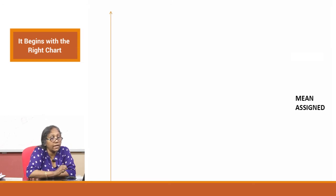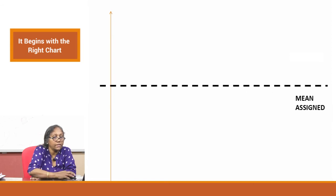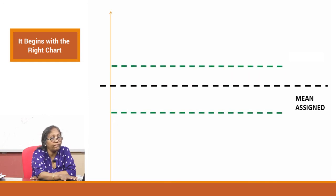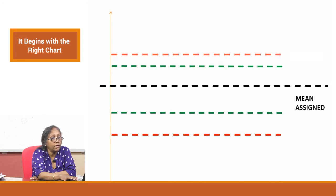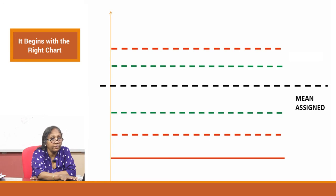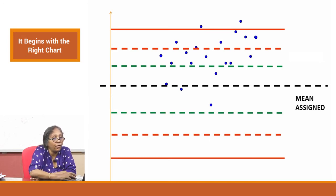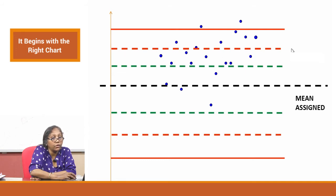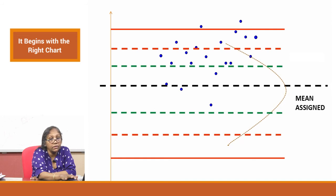Looking at this slide: this is a control we are running. Your assigned mean is here, with minus 1 SD, plus 1 SD, minus 2 SD, plus 2 SD, minus 3 SD, and plus 3 SD. Over 20 or so analyses, your data points are falling here. You have your assigned mean here, but the actually observed mean is somewhere else — there is an anomaly. The Gaussian you are expecting is here, but the Gaussian that is developing is there.